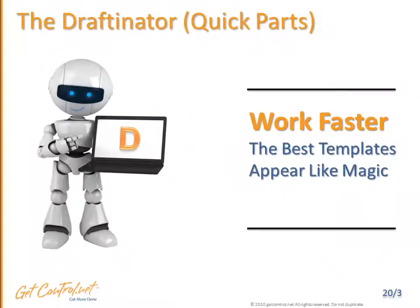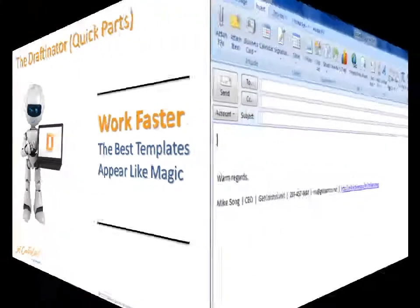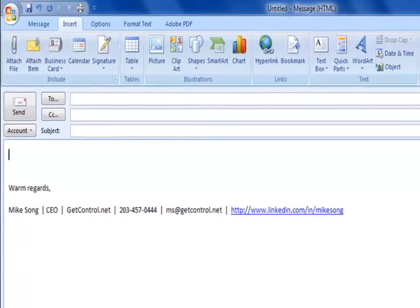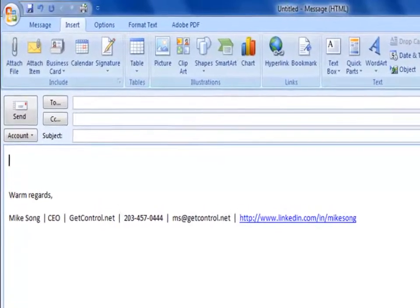Within Outlook, Lotus, or Gmail, there is an incredibly powerful robot I call the Draftinator. She allows you to create and use extremely helpful templates in a flash. Here's how the Draftinator works within Outlook.